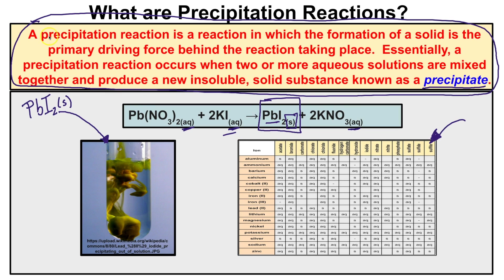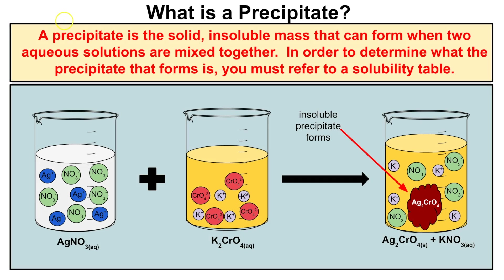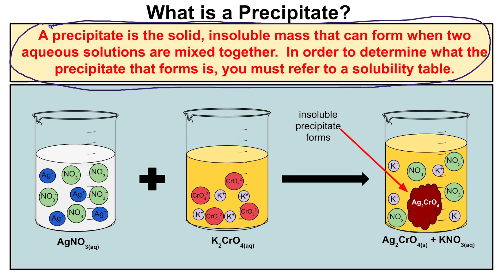Now let's take a look at how precipitates are formed on a microscopic level. A precipitate is a solid insoluble mass that can form when two aqueous solutions are mixed together. In order to determine what the precipitate will end up being, always refer to a solubility table. Let's take a look at an example.